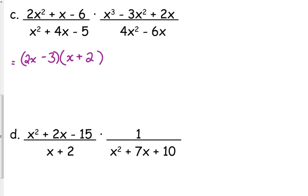Now, the second numerator. It does have a GCF, so I need to start by taking out an x from that second numerator. And we are left with x squared minus 3x plus 2. I'll factor that more in the next step.